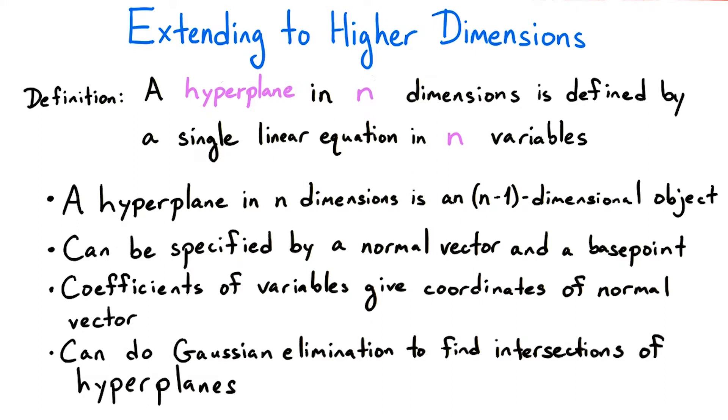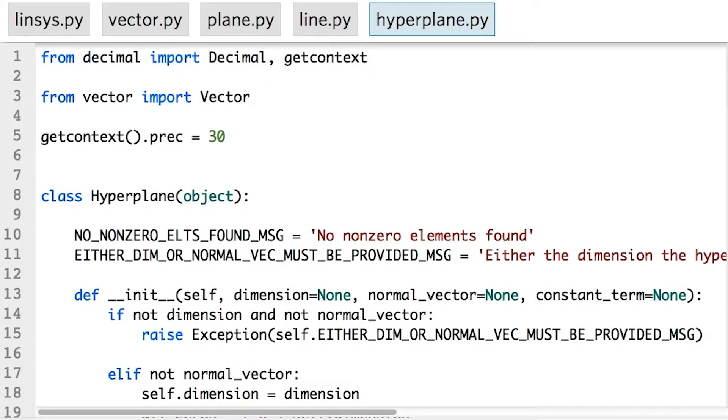Most importantly, Gaussian elimination works just as well on systems of equations in more than three variables, as it does with just two and three variables. Similar to the line and plane classes we created, let's now create a hyperplane class.